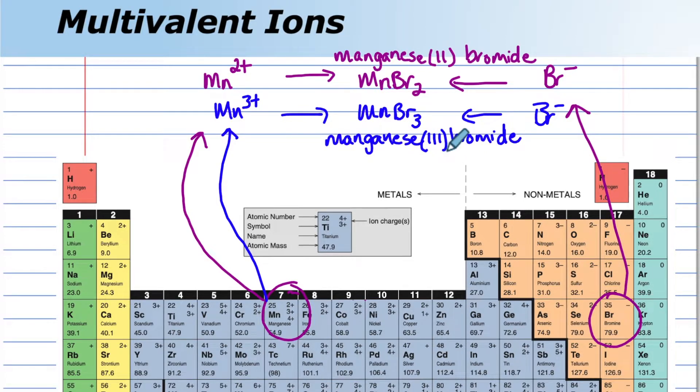We would need a 3 in the center to let people know that we're using the 3+ version. And the last possibility would be if we combine the 4+ version with the Br. We would need a subscript of 4.